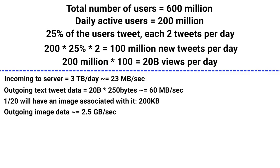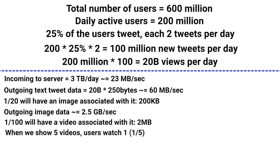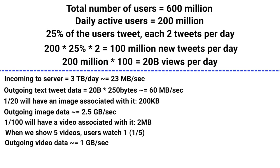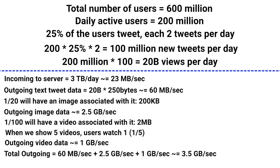Now let's calculate for videos. We assumed 1 out of 100 tweets has a video, and when 5 videos are shown to users, they only watch 1 out of the 5. So: 20 billion × 2 MB ÷ 100 ÷ 5 ÷ 86400 ÷ 1000 (converting MB to GB) ≈ 1 GB per second. Finally, summing up: the total outgoing data from the server is approximately 60 MB/s + 2.5 GB/s + 1 GB/s ≈ 3.5 GB per second.